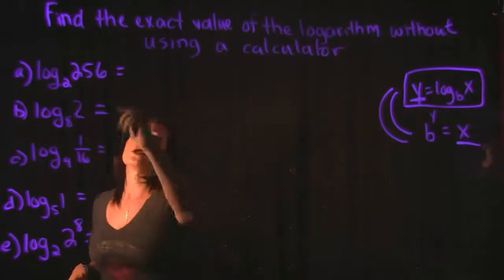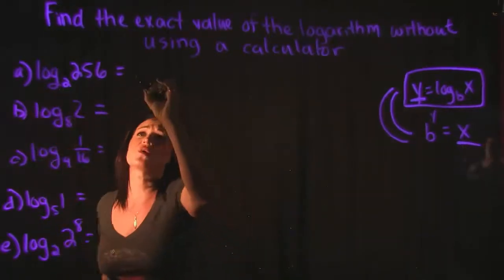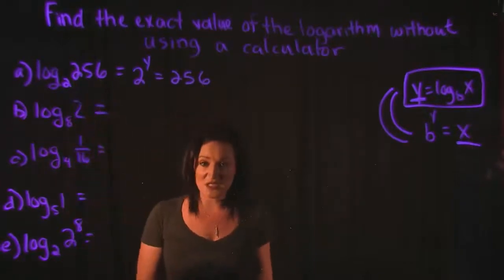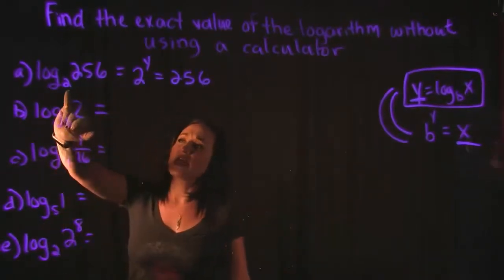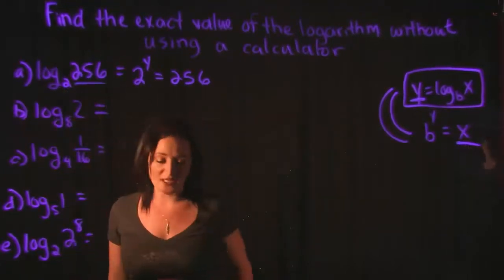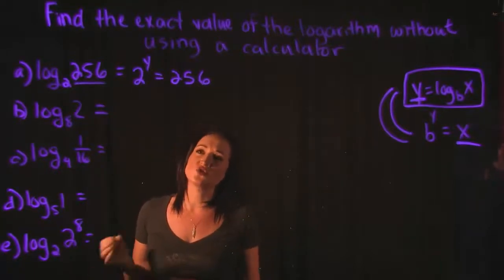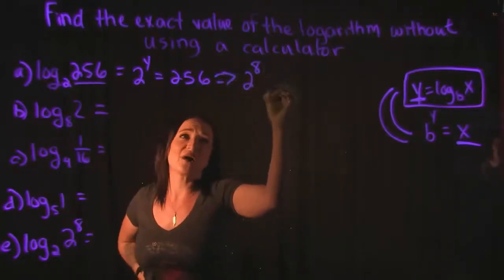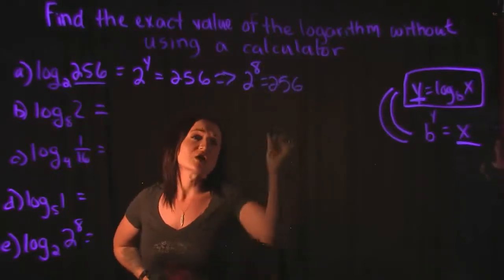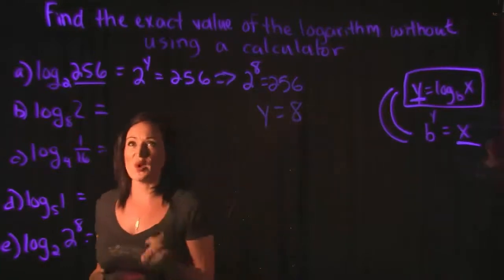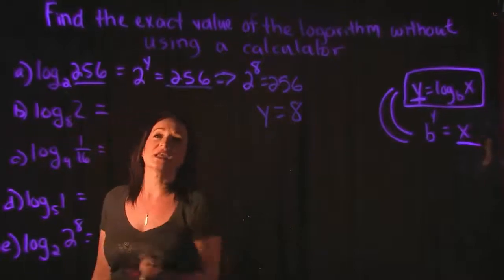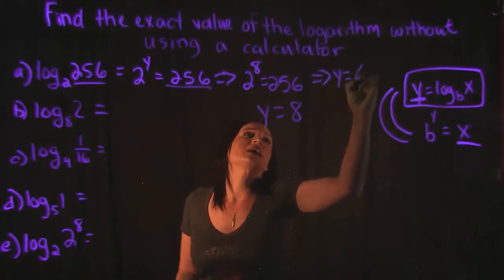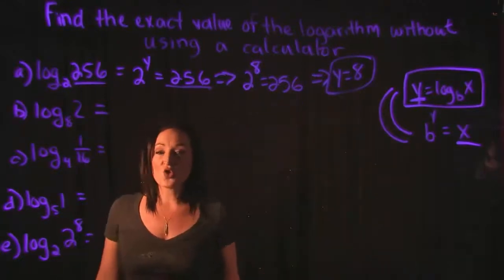The way that works in Example A is: two to what power is equal to 256? Well, two to the eighth power is equal to 256. So that means Y is equal to eight. Two to the eighth power equals 256, so for Example A, Y = 8.